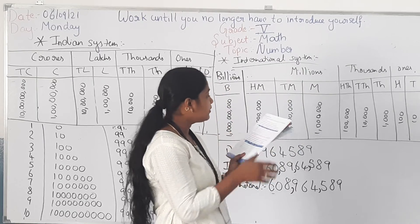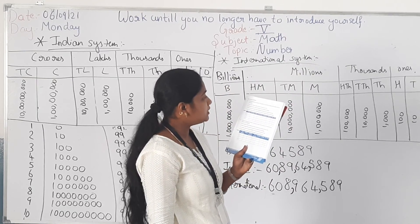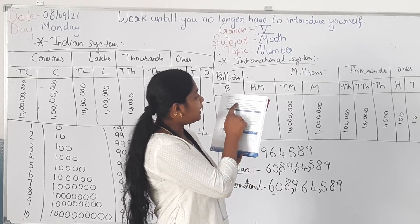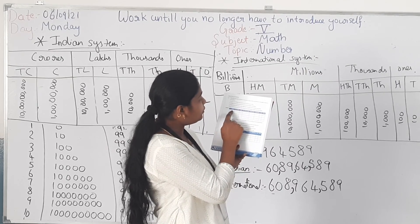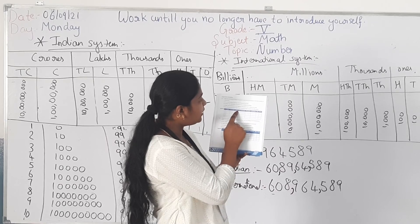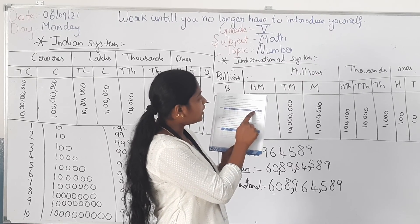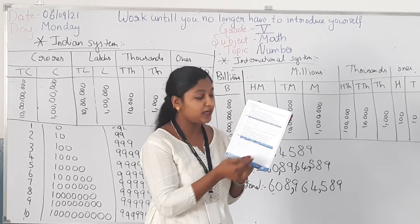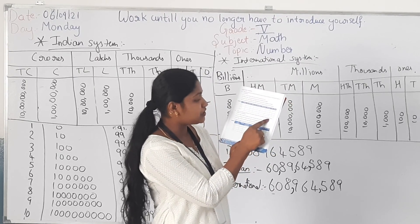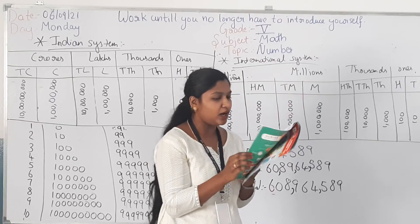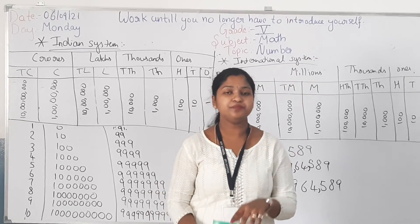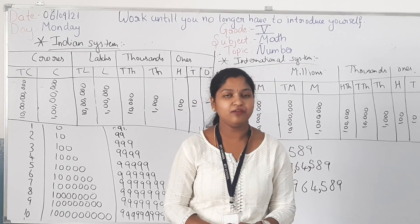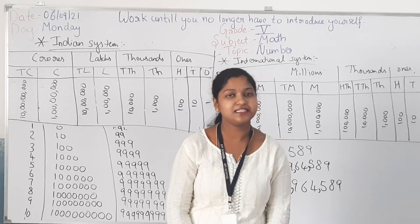Similarly do the 14th question. For question 15: write the following numbers in the place value chart according to the Indian system. For example, 2 crore, 13 lakh, 69,000 — you write 2 in the crore place, 13 in the lakh place, 69,000 accordingly. If they give you a number name in words, convert it into a number. Questions 1 through 16 are your homework. Students, be thorough with everything because next week you are going to start your FA1 test. Be prepared. I will meet you in the next class. Thank you.